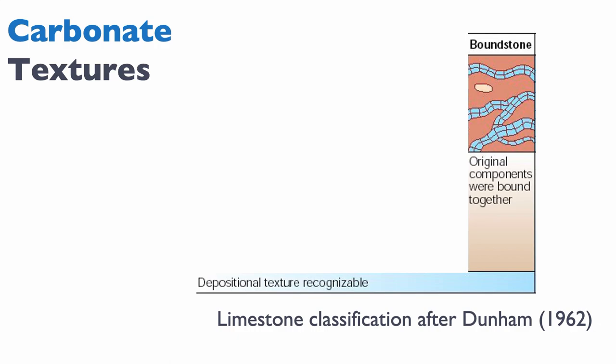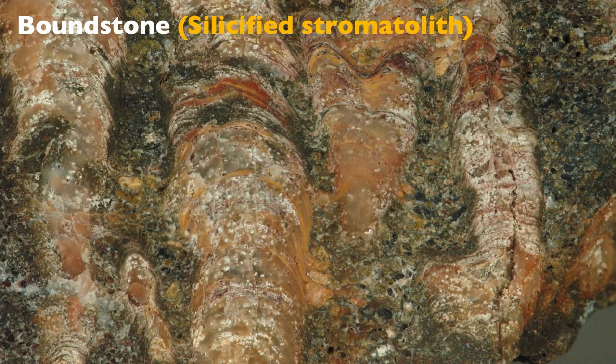Another possibility in the Dunham texture is that the components are bound together at time of deposition — like a coral reef or an algal mat. If that's the case, they are not loose sediments; we call this a boundstone. Here's an example: a silicified stromatolite that was originally calcium carbonate, forming a texture known as a boundstone in the Dunham classification.